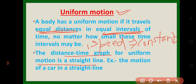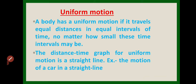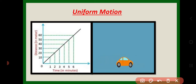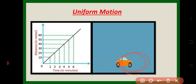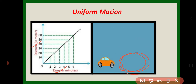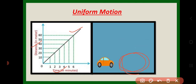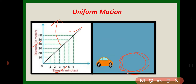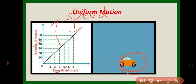Let us understand uniform motion through a small animation. As you can see, this car is moving uniformly in a straight line, meaning with a constant speed. The distance-time graph for uniform motion is always a straight line, and the slope of the distance-time graph represents speed.